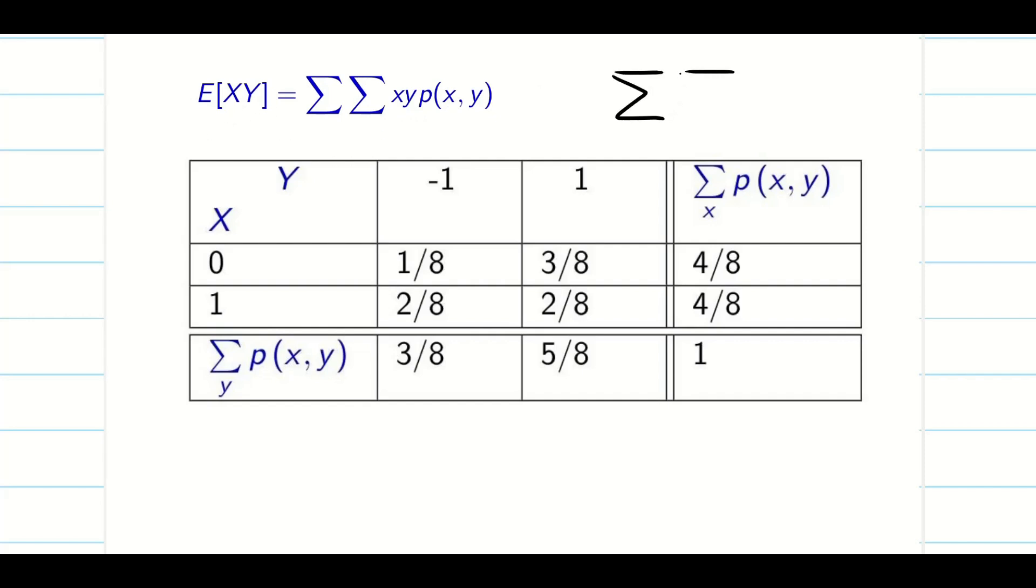E of XY is summation because E of XY depends on both variables. We write a summation for X, another summation for Y. We are involving both X and Y variable and the probability XY, the joint probability. Just ignore the last column and the last row. It is very simple.